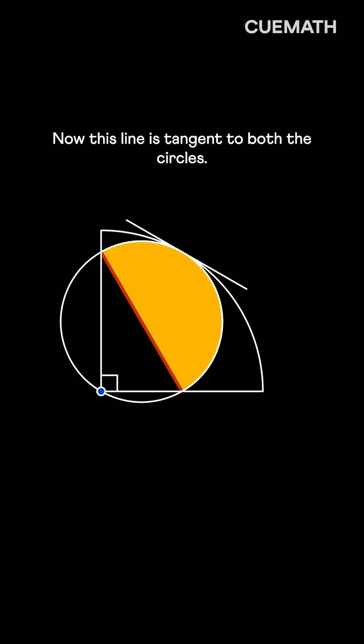Now this line is tangent to both the circles. So, the line perpendicular to it must pass through the centers of both.